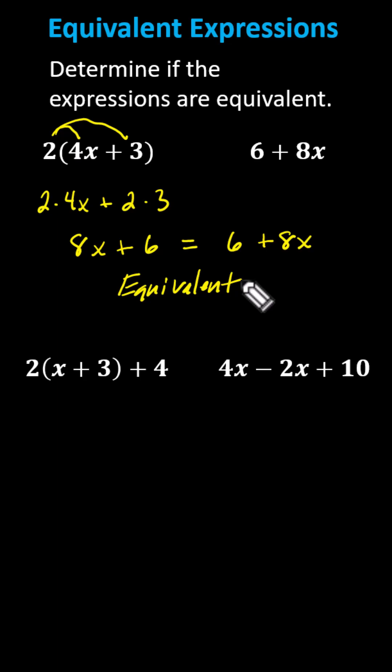Starting with the expression on the left, let's distribute the 2, which gives us 2 times x plus 2 times 3. 2 times x is 2x, plus 2 times 3 is 6, and we still have plus 4. Now we can combine like terms, 6 plus 4 is 10. The expression simplifies to 2x plus 10.